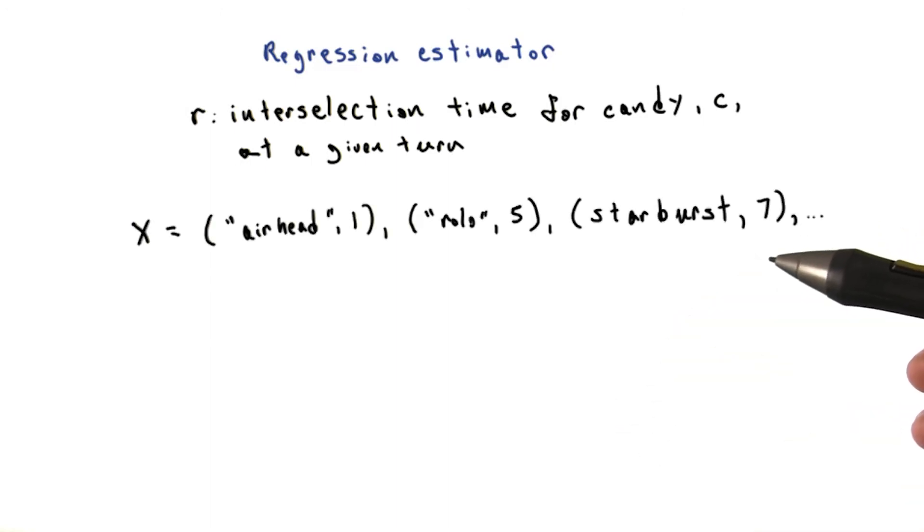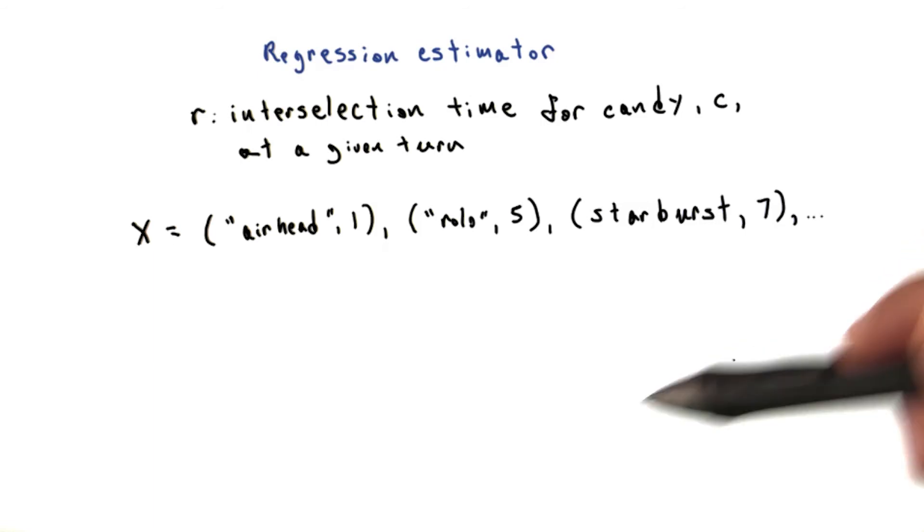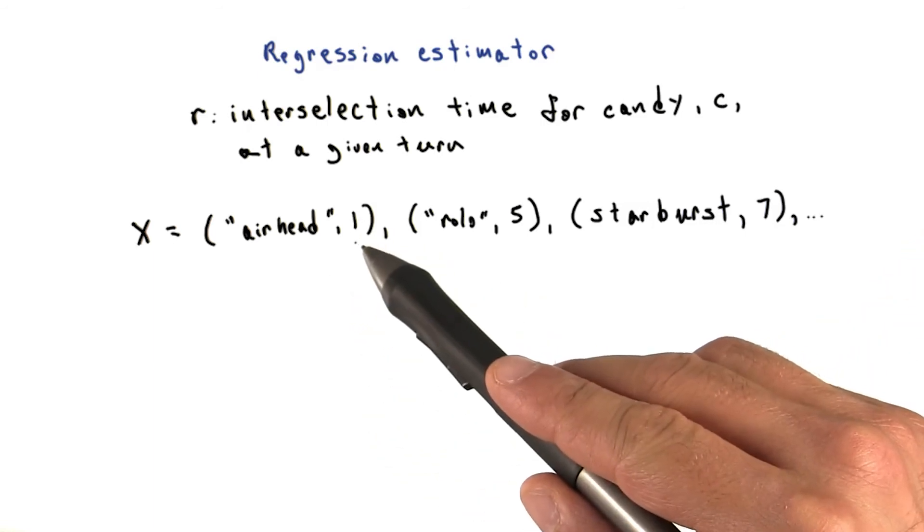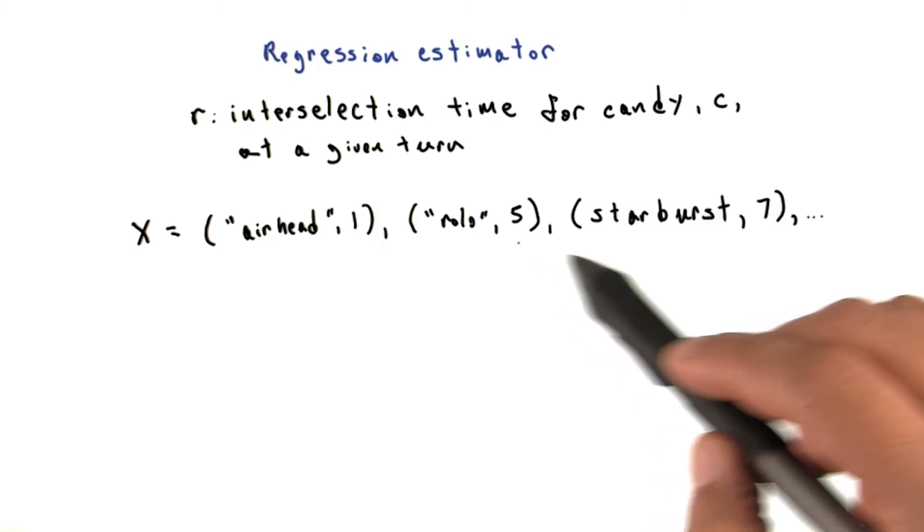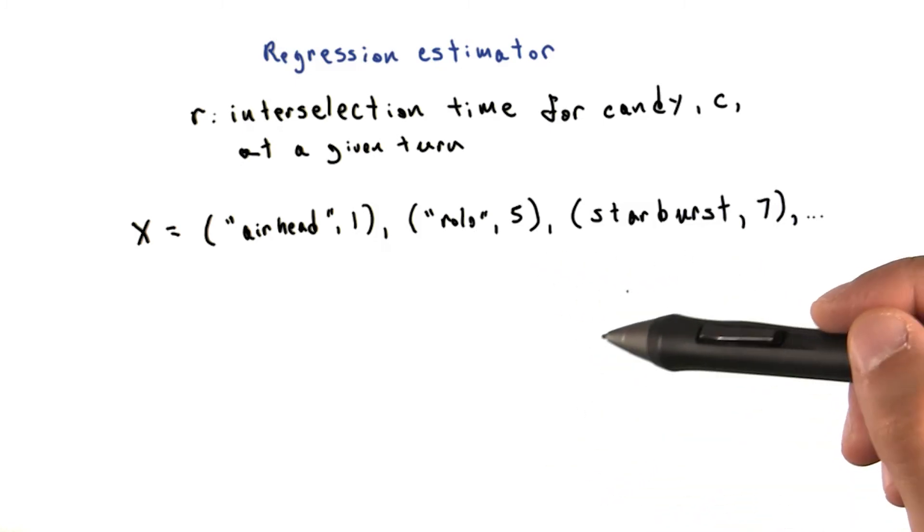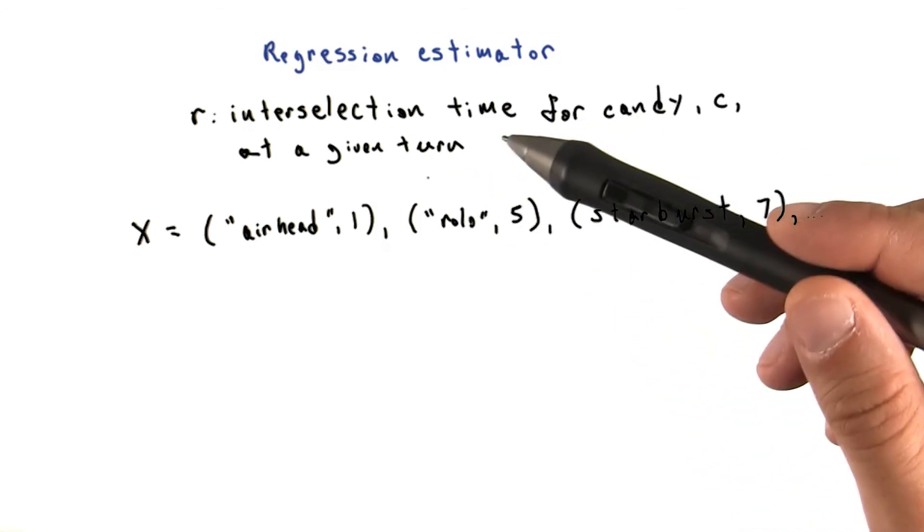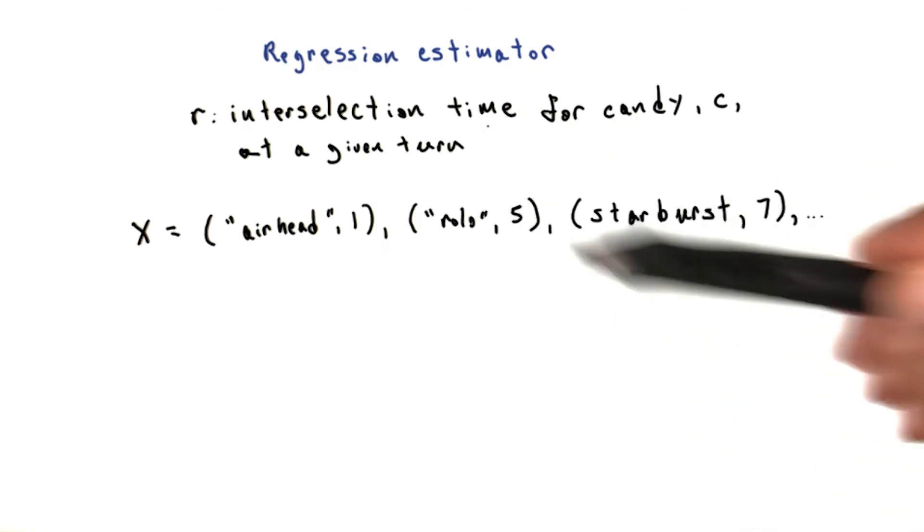Our data points are just the candy selections and the order in which they were selected, with the interselection time written beside them. In other words, given the list of candy selections and the number of turns since each candy had last been chosen, we are going to build an estimator, r, that will tell us, at a given turn for a given candy, how long it has been since it was last selected.